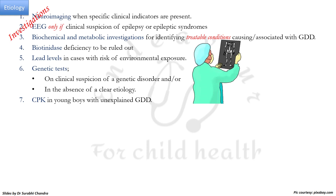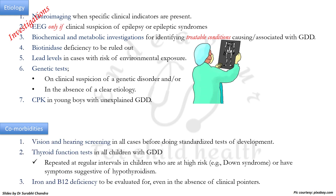Biochemical and metabolic investigations should be done for identifying treatable conditions; biotinidase deficiency should be ruled out and lead levels checked in patients with risk of environmental exposure. Genetic tests should be done on clinical suspicion of a genetic disorder or in the absence of a clear etiology. CPK should also be done in young boys with unexplained global developmental delay, especially in mitochondrial myopathies. For comorbidities, vision and hearing screen should be done in all children before standardized testing; thyroid function tests and evaluation for iron and B12 deficiency should also be performed.